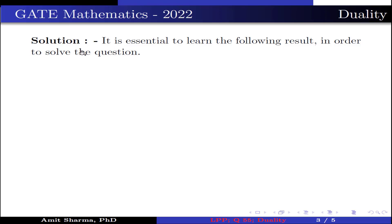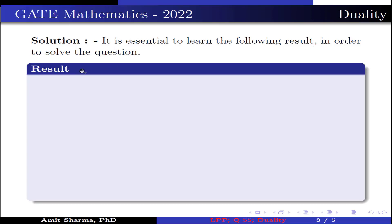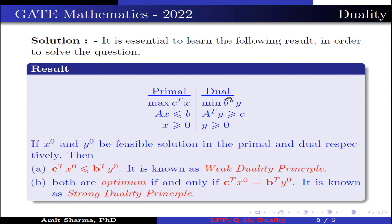It is essential to learn the following result in order to solve the question. Consider a primal problem — maximize C^T x subjected to Ax ≤ b, x ≥ 0 — and its dual problem — minimize b^T y subjected to A^T y ≥ c, y ≥ 0. If x0 and y0 are feasible solutions of the primal and dual respectively, then C^T x0 ≤ b^T y0, meaning the maximum value of the primal objective is always less than or equal to the minimum value of the dual objective. This is known as the weak duality principle.